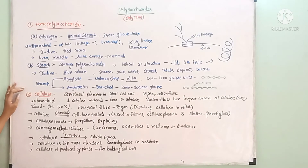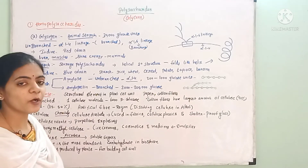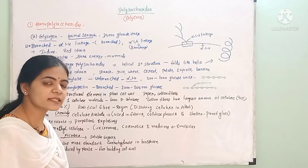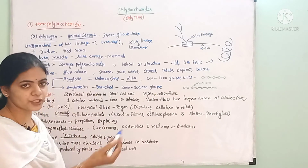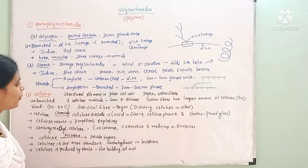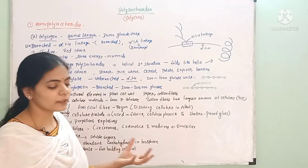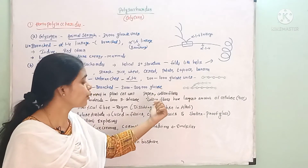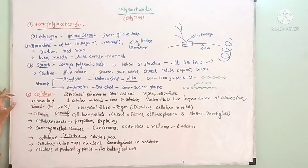The next polysaccharide is cellulose. Cellulose is a structural polysaccharide. In plants, cellulose forms the structure. Unlike starch, cellulose is used as a structural polysaccharide. Paper is nothing but cellulose, and cotton fibers are also cellulose.